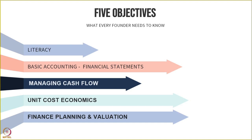The fourth objective is what is very popularly used in startup terms for describing a business model in terms of the revenues and expenses it may have to incur repetitively, and the profitability potential of a particular business. This is called unit cost economics — it looks at the business at a unit level, identifies and tracks all costs and expenses on one side and all revenues on the other, and sees whether one compensates for the other. This approach is considered the standard among startups to describe how a business presents itself to investors at various stages.